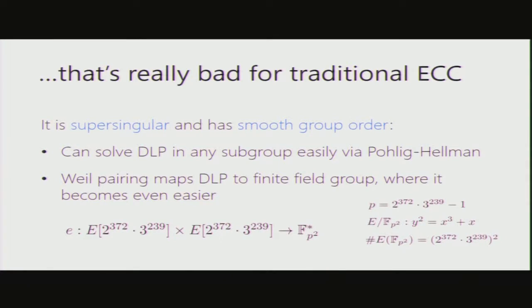And this curve is really bad for ECC, right? The main reasons are it's supersingular and it has a smooth group order. So the smooth group order makes sure we can easily solve DLPs in any subgroup in a matter of milliseconds. And because it's supersingular, we have the Weil pairing that is actually a multiplicative transfer of the discrete logarithm from the curve to a finite field. So this curve fails most criteria for being a secure curve for traditional ECC. But maybe we can use these other properties in a different context.